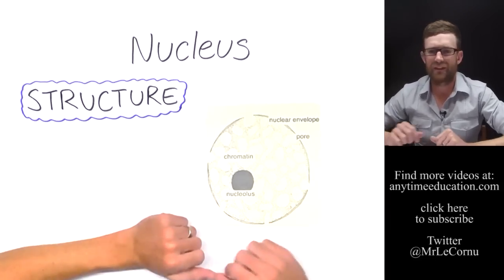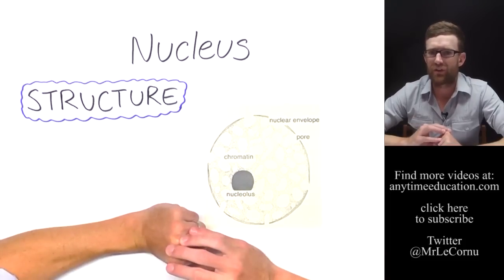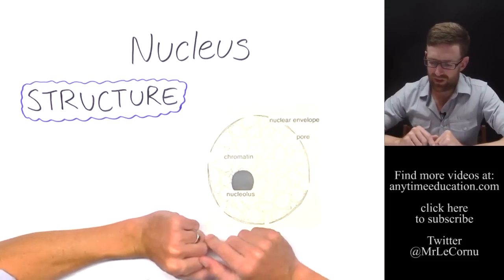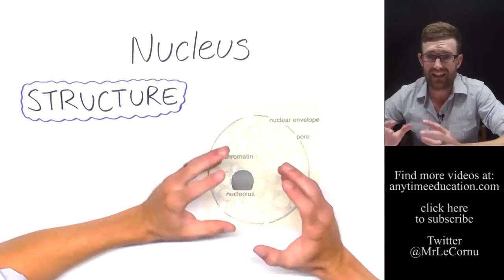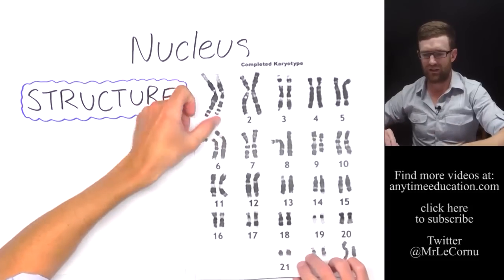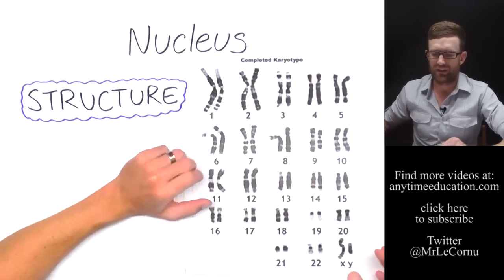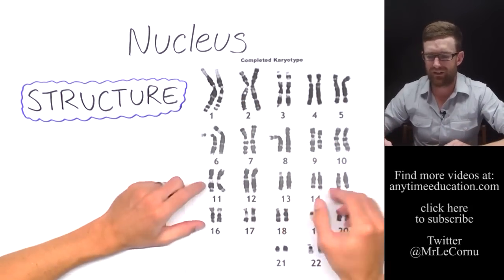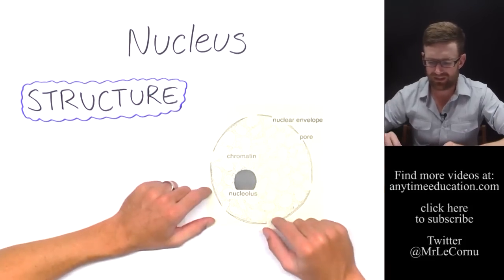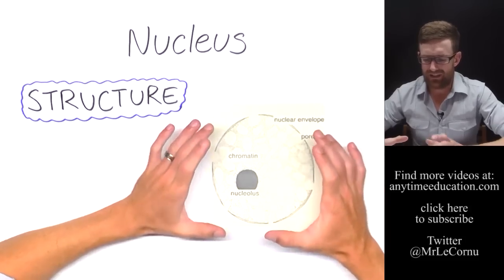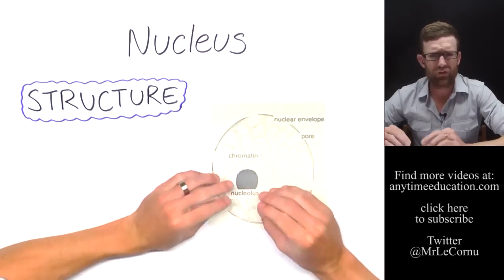Nuclear pores are little gaps in the nuclear envelope where things can move in and out. The main role of the nucleus is to house the genetic information of the cell, which is the DNA. In this diagram the DNA is in the form of chromatin. When the cell is going to divide, the chromatin gets condensed into chromosomes, but when the cell is not dividing, the DNA exists as chromatin.